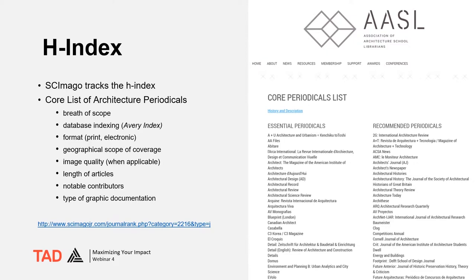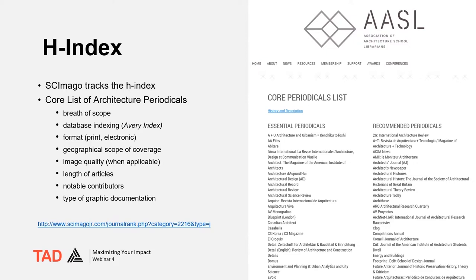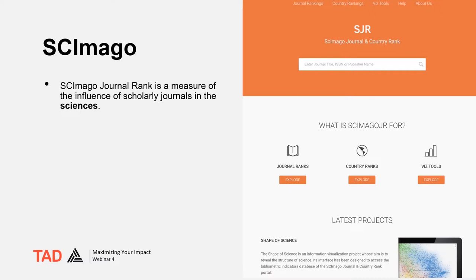The Smoggle list is weighted toward the sciences, so the Journal of Building Performance Simulation has a high H-Index of 23, as does Architectural Science Review. Architectural Design comes in with a 13, and Harvard Design Magazine has a 3. Smoggle journal rank measures the influence of scholarly journals, accounting for both the number of citations received and the perceived prestige of the journal. A journal's SJR is a numeric value indicating the average number of weighted citations received during a selected year per document published in that journal during the previous three years.